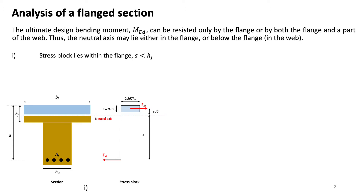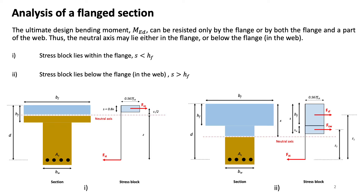If the bending moment is higher than the capacity of the flange, then we have the second case where the neutral axis will lie below the flange in order for a portion of the web to work in compression as well. So the stress block lies below the flange and S will be bigger than HF. We will have two lever arms Z1 and Z2, a new compressive force in the web, the compressive force developed in the flange, and the parameter SW which is the added stress block component in the web. We are going to see all of them in detail in the following slide.